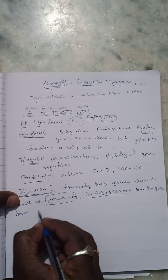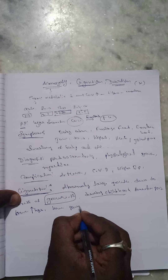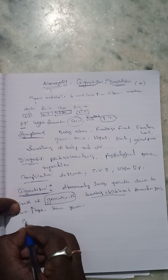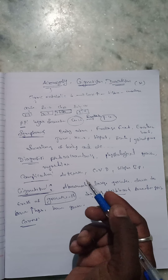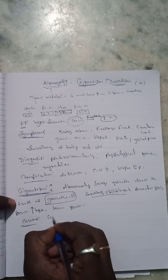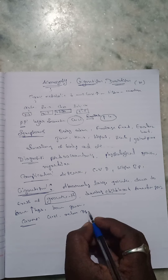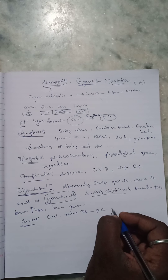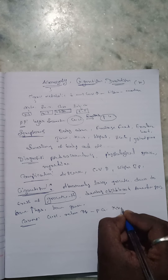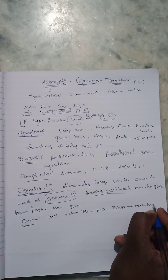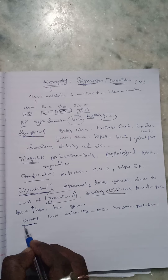In gigantism, height increases and bone growth also increases. What are the causes? The most common cause is too much growth hormone release with the help of the pituitary gland. The excess growth of hormone causes normal bone growth to stop, while the growth hormone continues to increase.